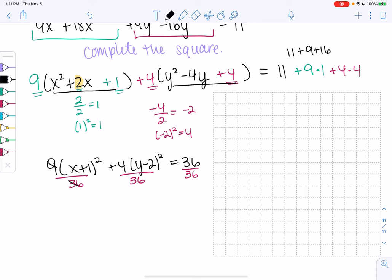And we should get, 9 over 36 becomes 1 over 4. So x plus 1 squared over 4. We get 4 over 36 is 9. So y minus 2 squared over 9 equals 1.